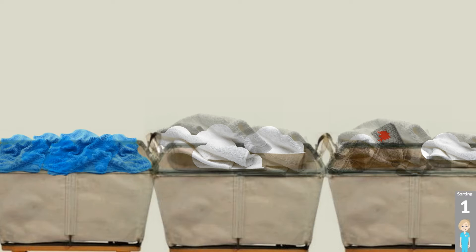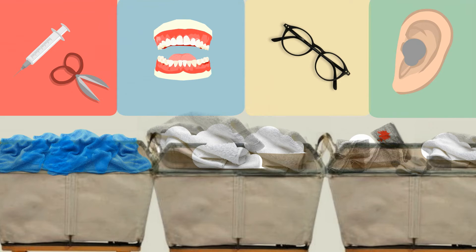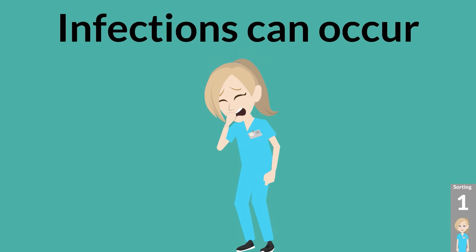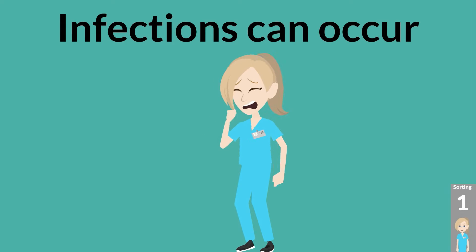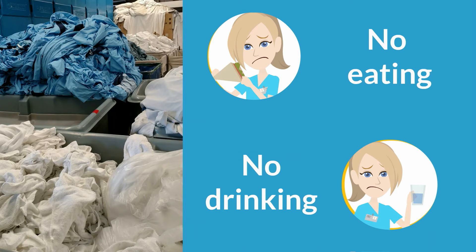During the sorting process, the worker should be on alert for unexpected items that may be contained in the soiled linen, such as used needles and other contaminated sharps, medical devices, patient's dentures, eyeglasses, and hearing aids. Infections resulting from failure to use appropriate barrier precautions, handwashing, and other infection prevention practices may occur unless standard precautions are strictly adhered to in this high-risk area. Individuals working in these areas should never eat, drink, or perform other activities that could introduce pathogens from the environment into their mouth, eyes, or mucous membranes.